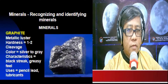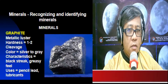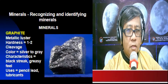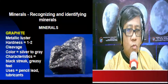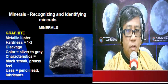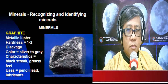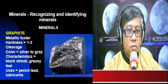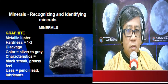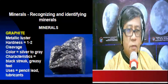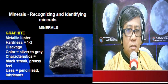Now let's examine some minerals and their physical properties. Graphite exhibits metallic luster and has a hardness between 1 and 2, making it relatively soft. Graphite exhibits cleavage and is silver to grayish in color. Other characteristics include a black streak and greasy feel. Graphite is used in making pencils and lubricants.